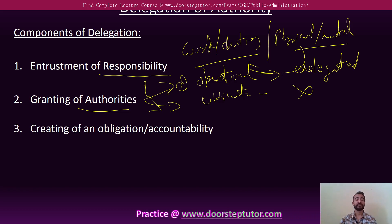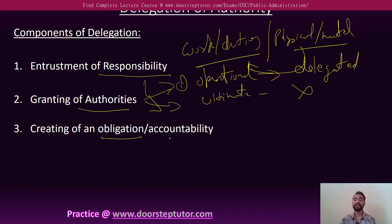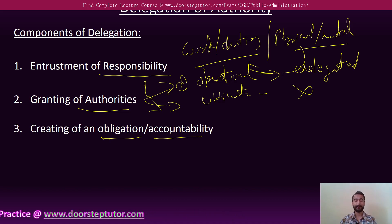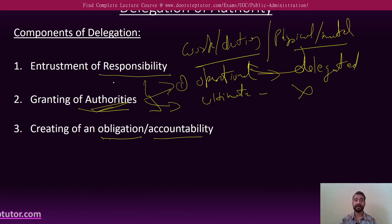The third component is the creation of obligation and accountability. The person assigned with some authority and responsibility must be accountable for the tasks or the actions that he performs.